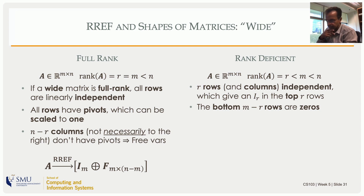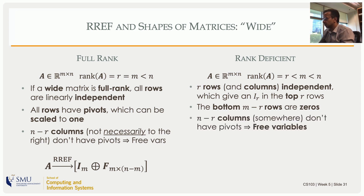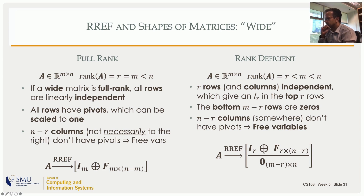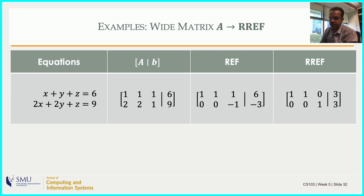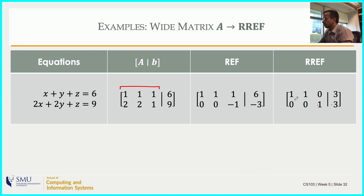For a wide rank-deficient matrix, n - r columns correspond to free variables, and m - r rows are zero rows at the bottom. For example, with three variables (columns) and two equations (rows), the coefficient part is a 2×3 matrix. Running RREF: subtract twice row 1 from row 2, scale by -1 to make the pivot positive, then subtract the pivot row from row 1 to zero out above. The RREF shows the identity matrix [0 1; 1 0] hiding in two columns with a free variable column in between.